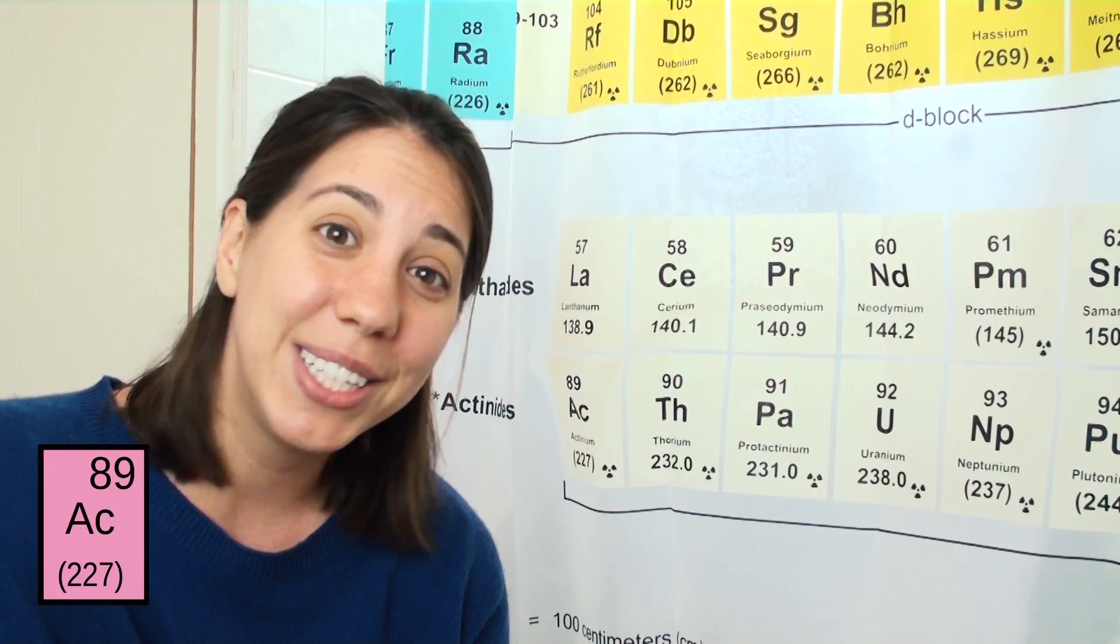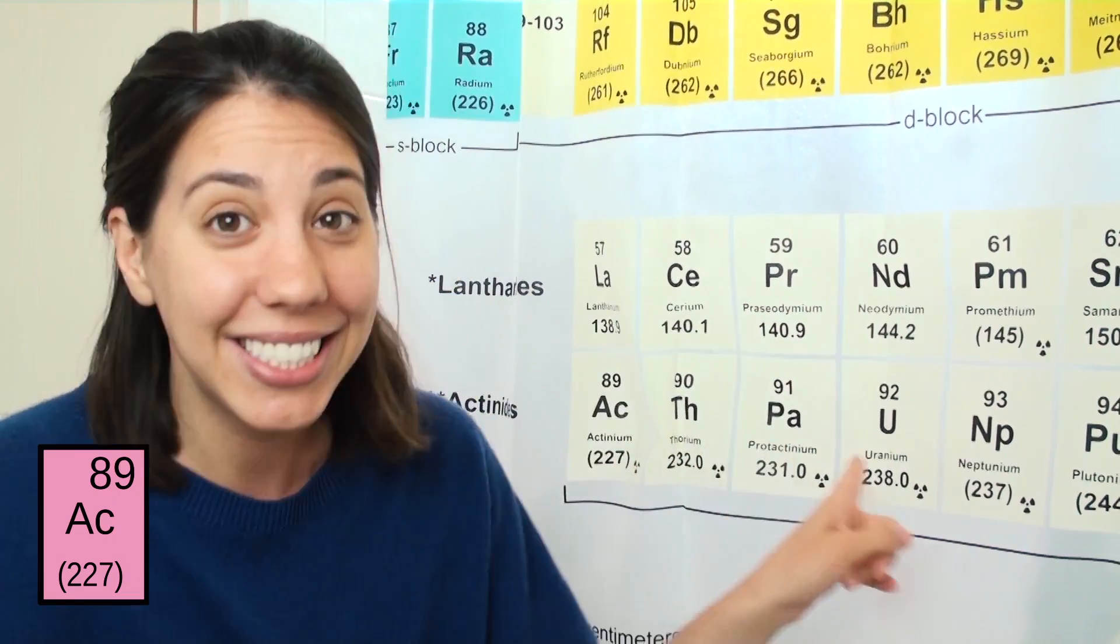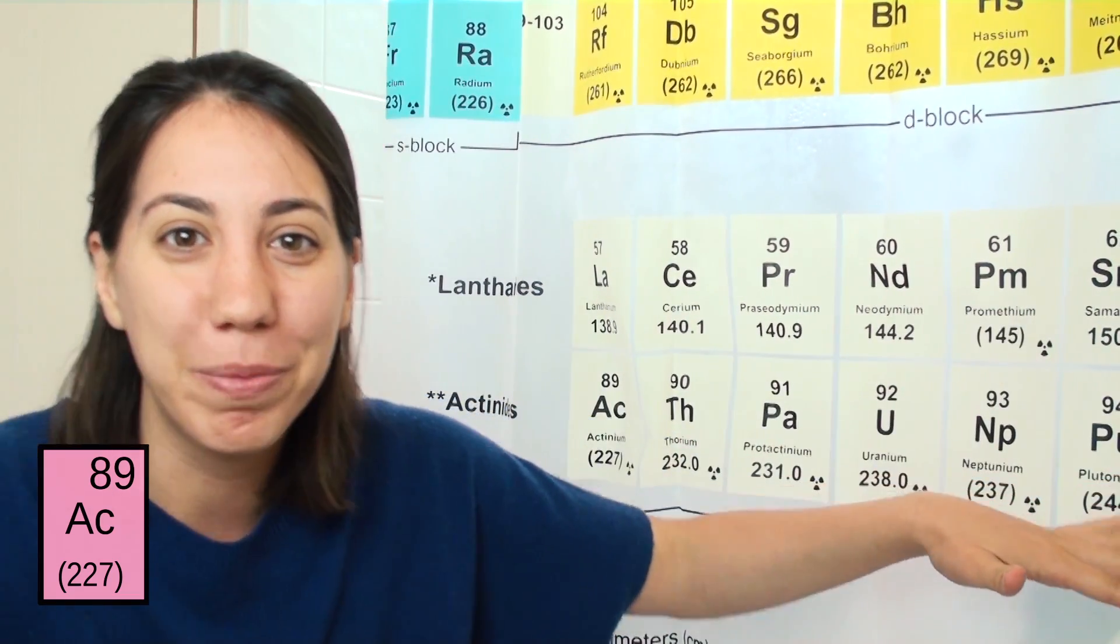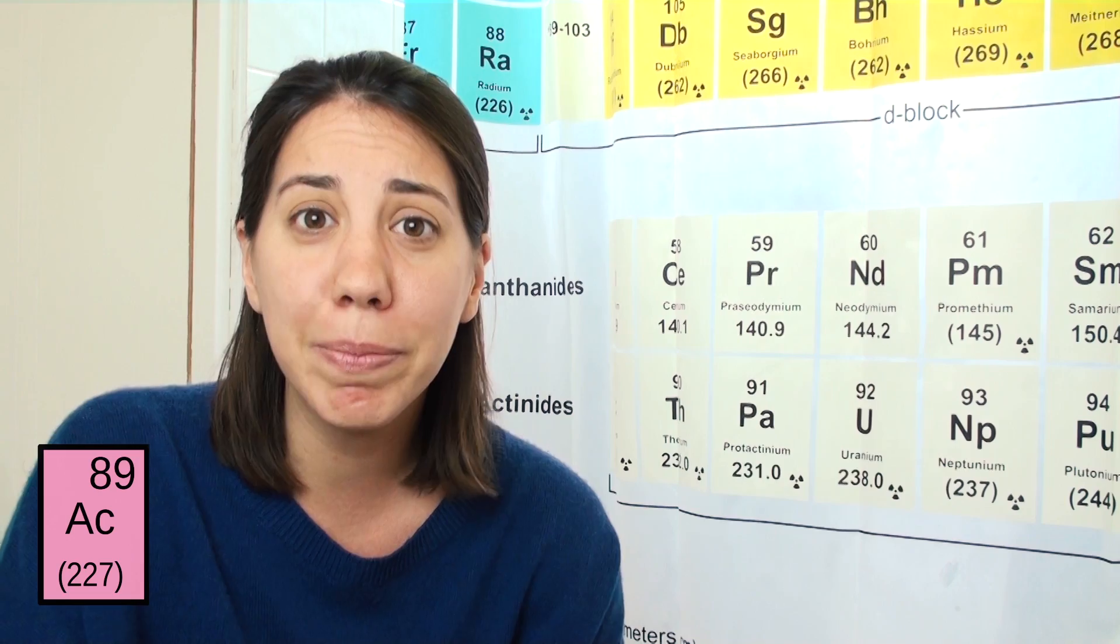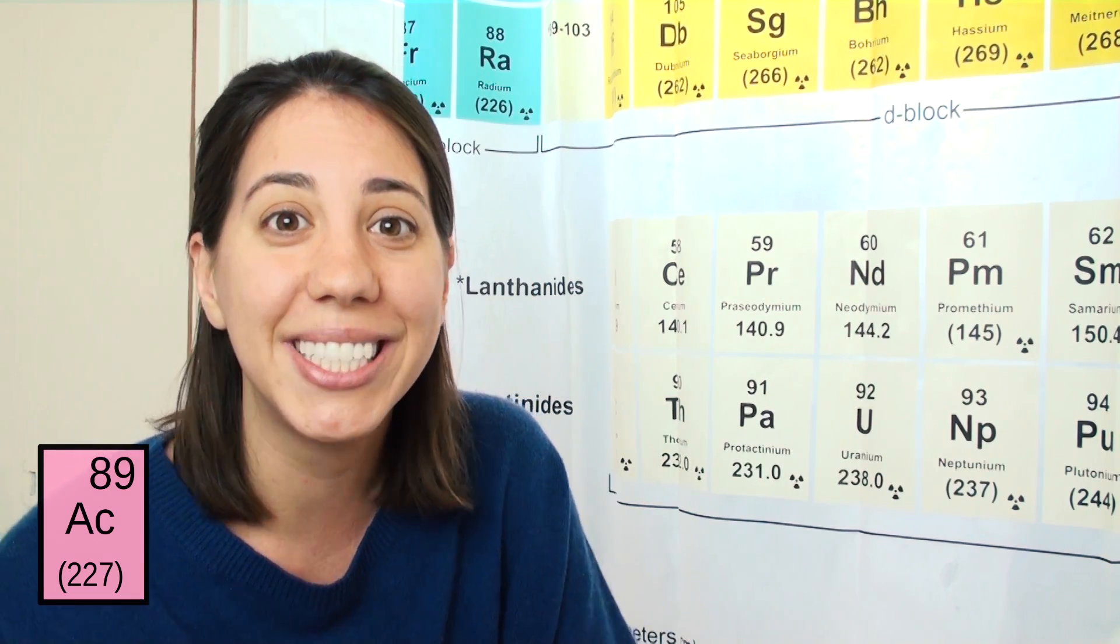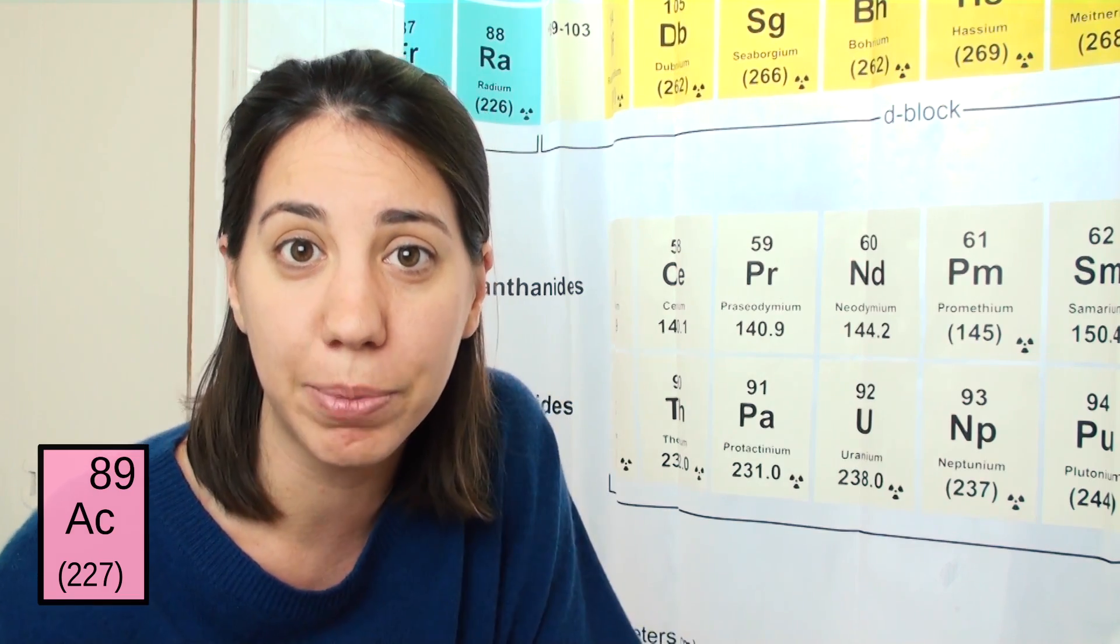So I figured I would end week one with an actinide. It's this bottom row of the periodic table of elements, and they can be either naturally occurring, man-made or synthetic, or some of them can only be found in the decay of other elements.